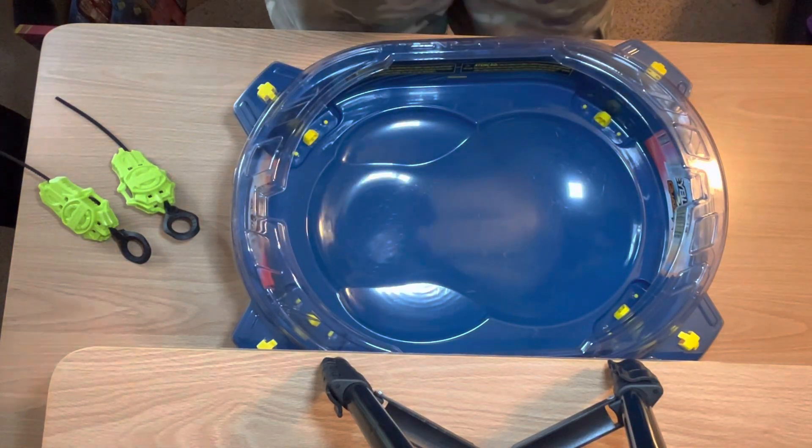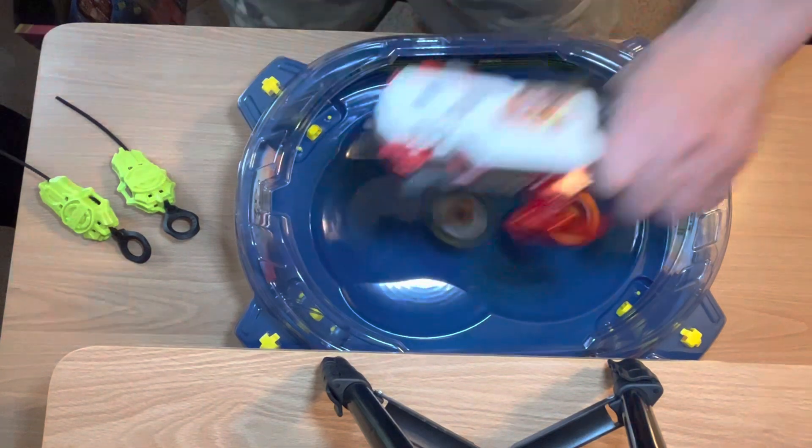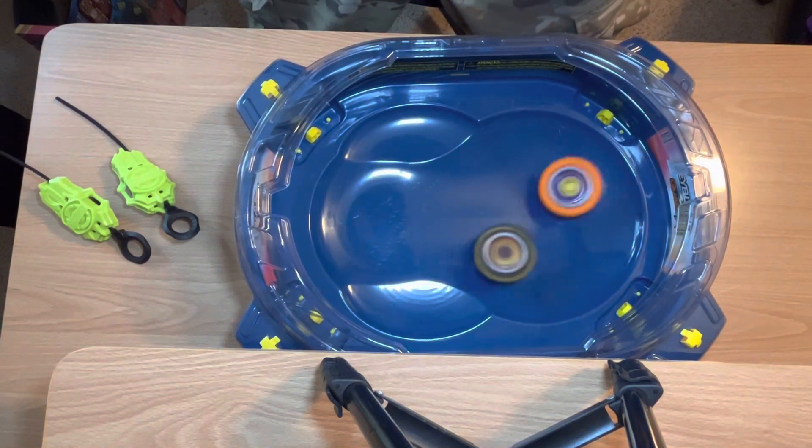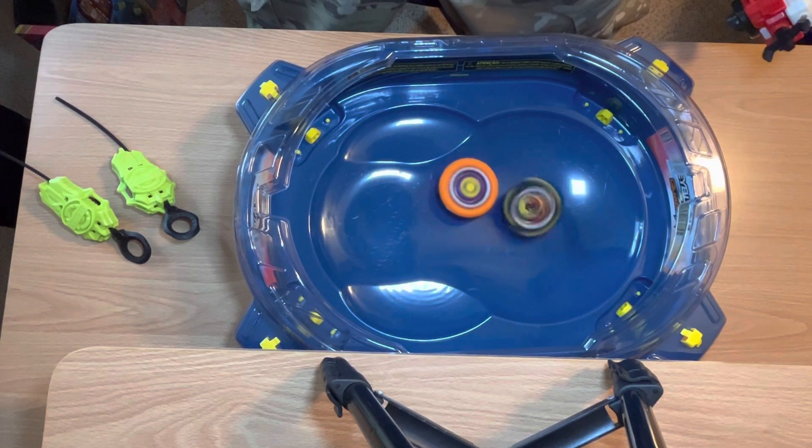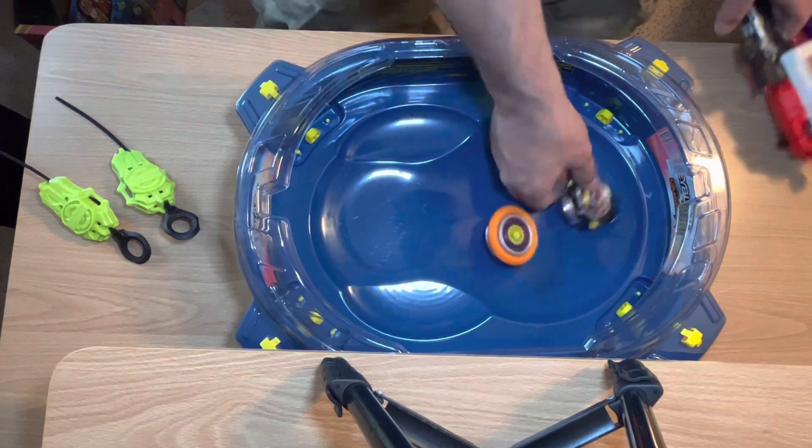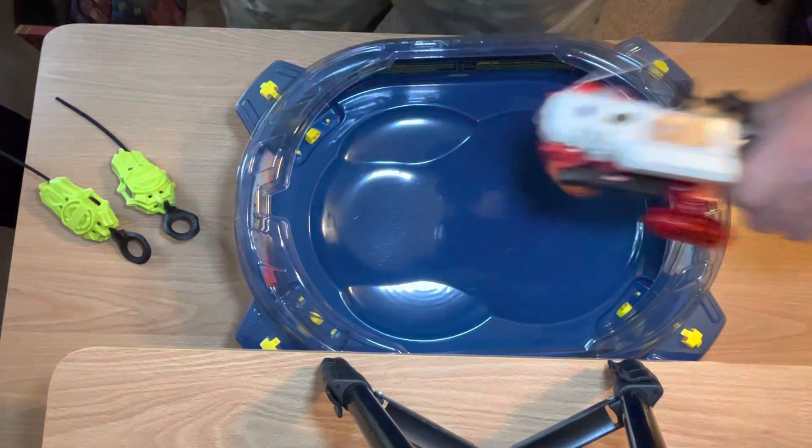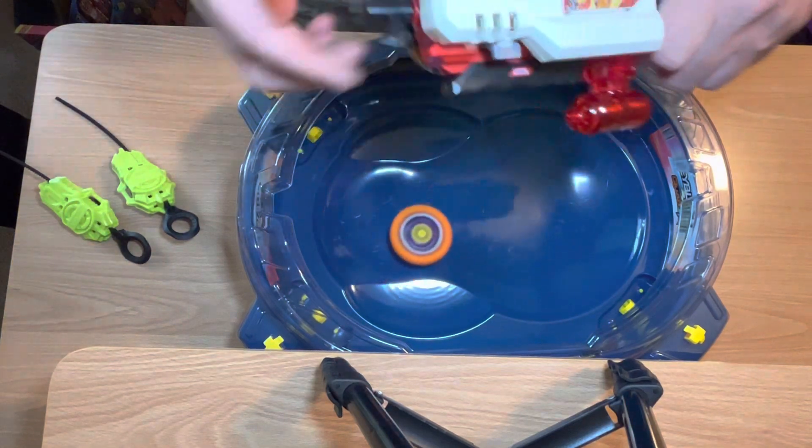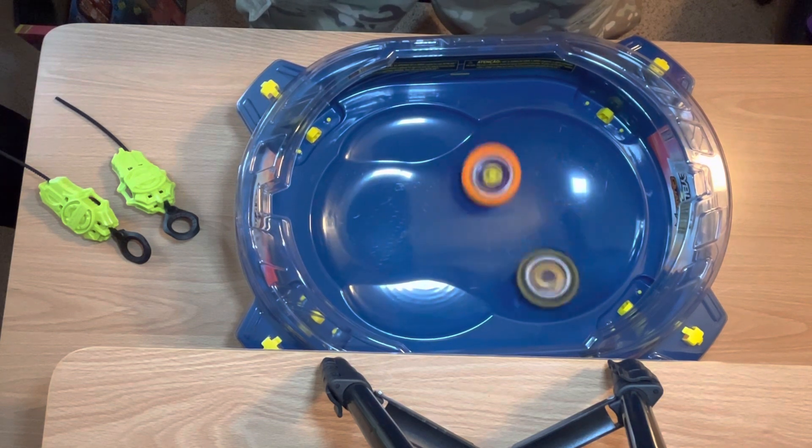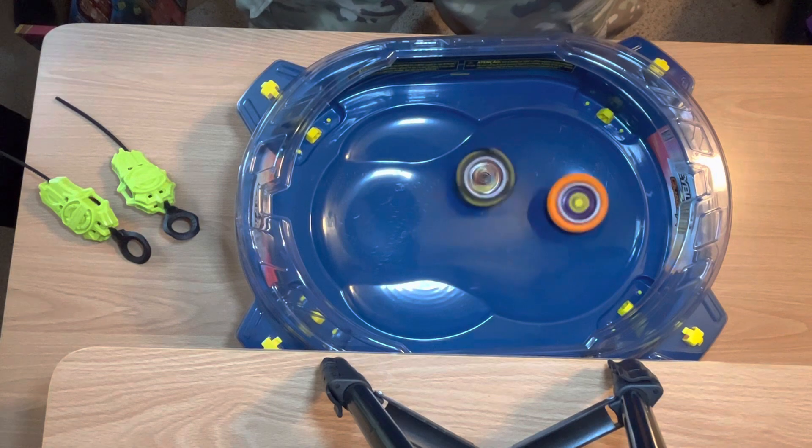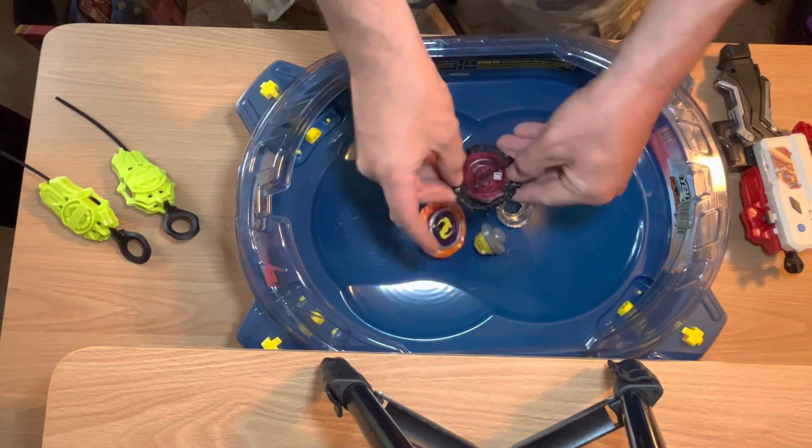Okay, put that in apex plus now. And three, two, one, let it rip. Okay, and that is basically how it works in apex plus. Let's get the first battle underway. Lightning Pandora versus Belfire. Three, two, one, let it rip. And round one goes to Lightning Pandora. Very nice. Three, two, one, let it rip.